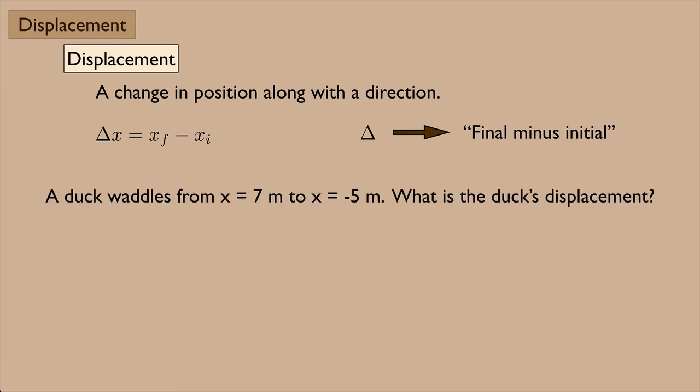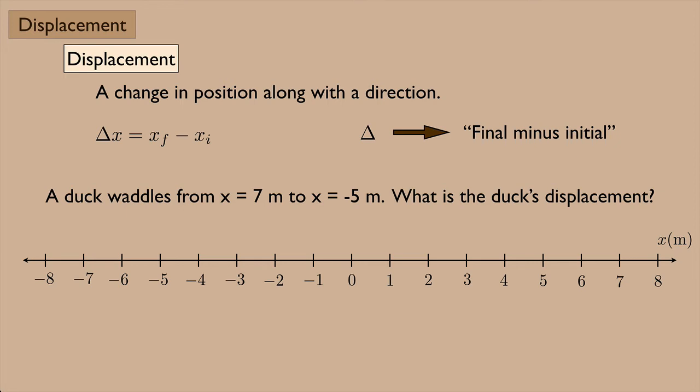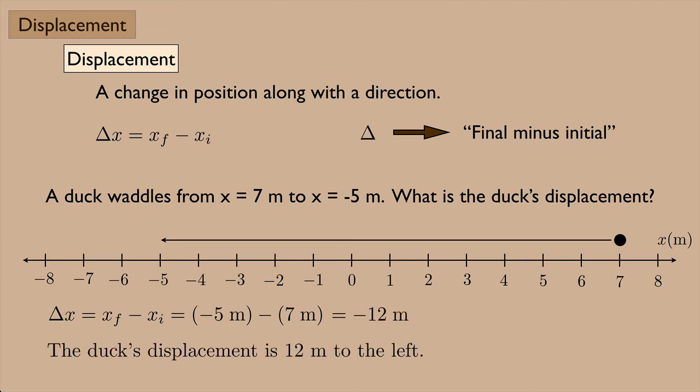So here's an example. A duck waddles from x equals 7 meters to x equals negative 5 meters. What is the duck's displacement? So we could draw an axis, and here's our duck all the way over at 7, and the duck travels all the way over to negative 5. Delta x, which is x final minus x initial, would be negative 5 minus 7, and that gives us negative 12 meters. And so the duck's displacement is 12 meters to the left.